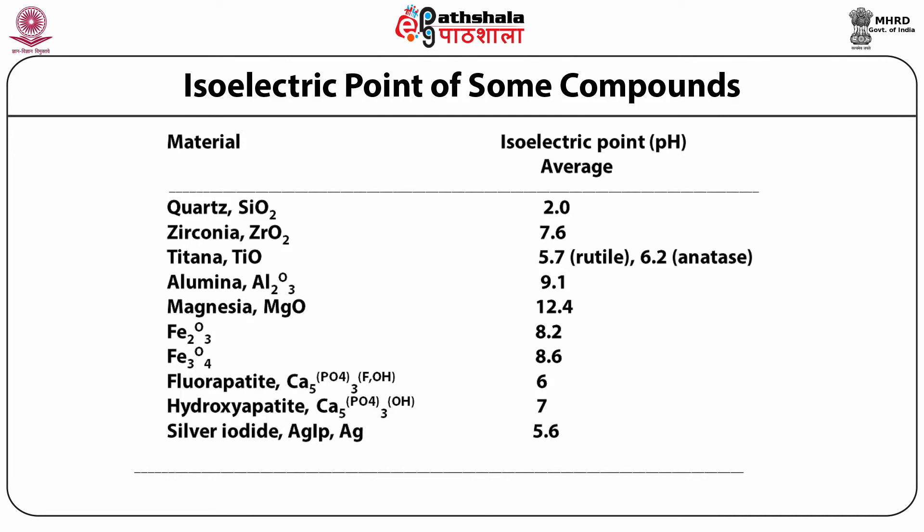The isoelectric points of some compounds are tabulated. For quartz (SiO2), the isoelectric point is 2.0; for zirconia it is 7.6; for titanium oxide it is 5.7 for rutile and 6.2 for anatase. For magnesium oxide (MgO), the isoelectric point is 12.4, which is very high.